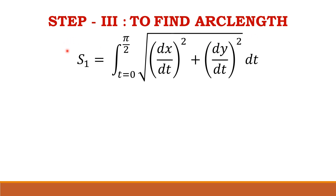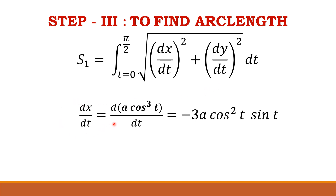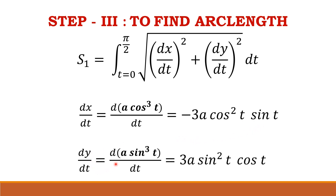In step 3, we obtain the arc length s1 of the branch of the asteroid in the first quadrant, given by the formula: s1 equals the integral from t = 0 to π/2 of the square root of (dx/dt)² plus (dy/dt)², integrated with respect to t. Here, dx/dt is obtained by differentiating x = a cos³t, giving minus 3a cos²t sin t. And dy/dt, by differentiating y = a sin³t, gives 3a sin²t cos t.